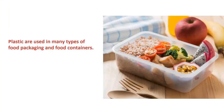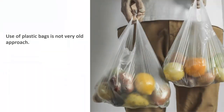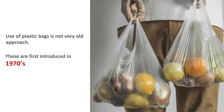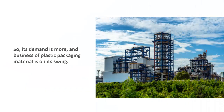Plastics are used in many types of food packaging and food containers. They help protect foods from damage and keep the food safe and fresh. The use of plastic bags is not a very old approach — they were first introduced in the 1970s. It is the easiest form of packaging, so its demand is high, and the business of plastic packaging material is on the rise.